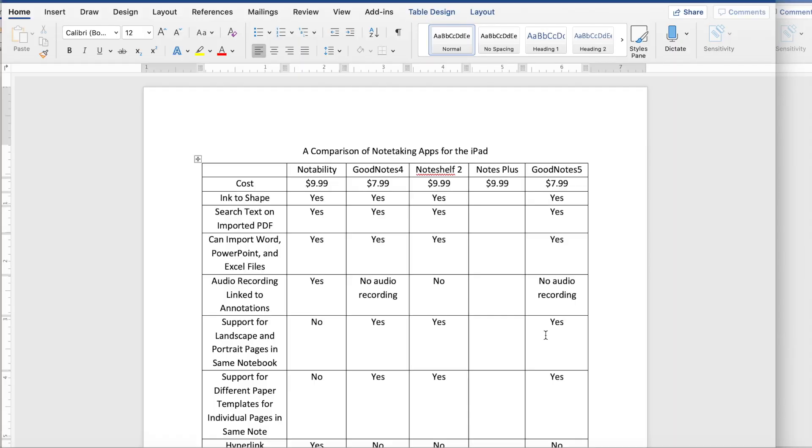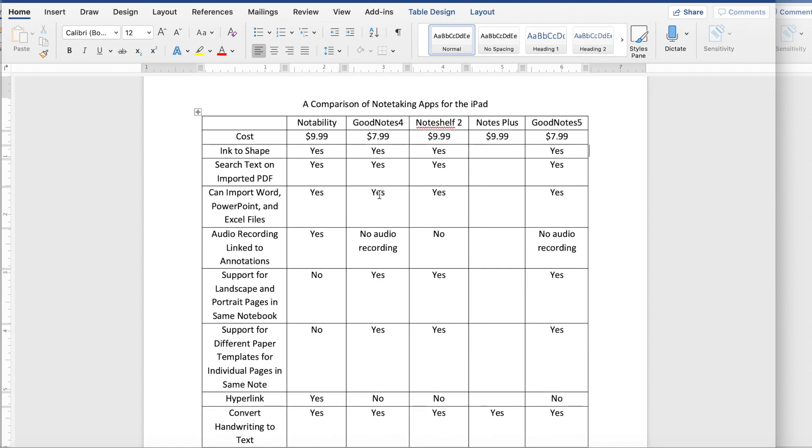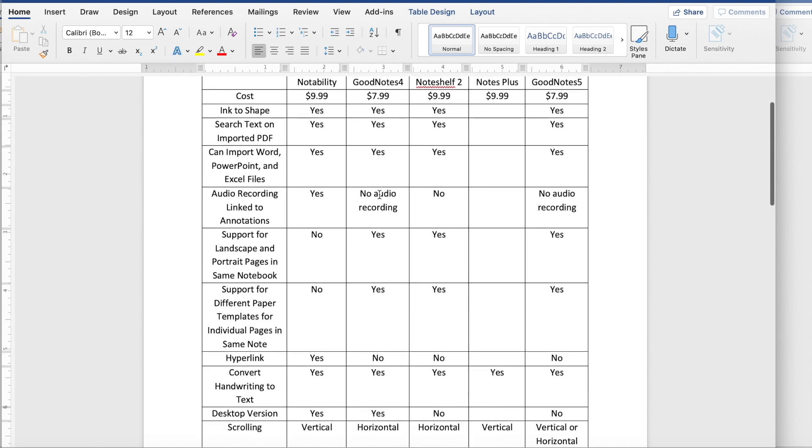The last thing I wanted to share with you is this document I've been working on for the past year about comparing all these note taking apps. GoodNotes 4 is pretty outdated now, so I haven't really been keeping up with that. They're not updating it anyway. GoodNotes 5 is more relevant. Between Notability, NoteShelf 2, GoodNotes 5, and I was trying to do Notes Plus, but I never really got around to it. I've been keeping track of the new features that they've been adding in each update, so I can see what the strengths are for each note taking app.